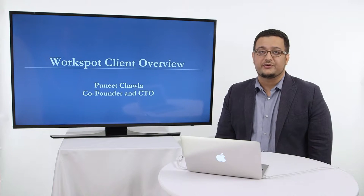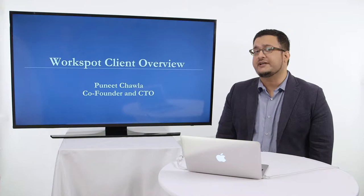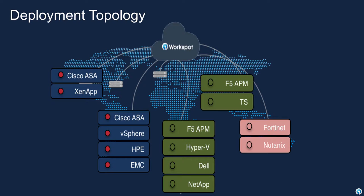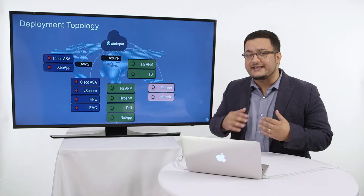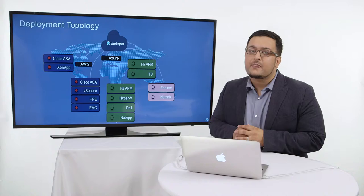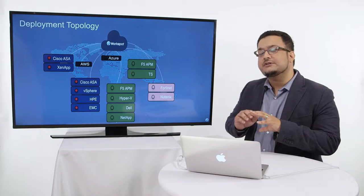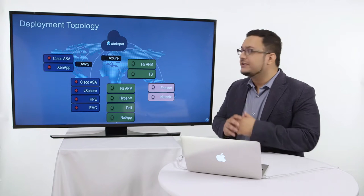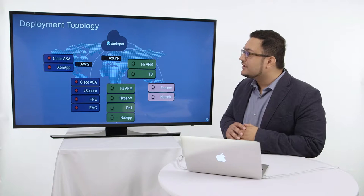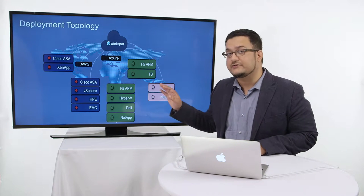This video provides an overview of WorkSpot's unique client architecture. Let's look at different deployment topologies used by WorkSpot customers. Because WorkSpot is built using a cloud plane and a data plane decoupling, we allow customers to have different data centers and manage them using a single cloud plane. Our client decouples the control and configuration from the data center, so we can have customers running different data centers in different parts of the world.